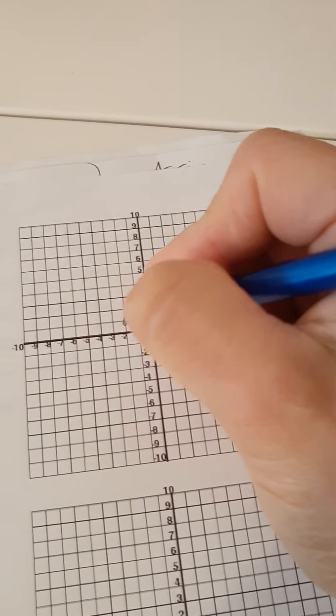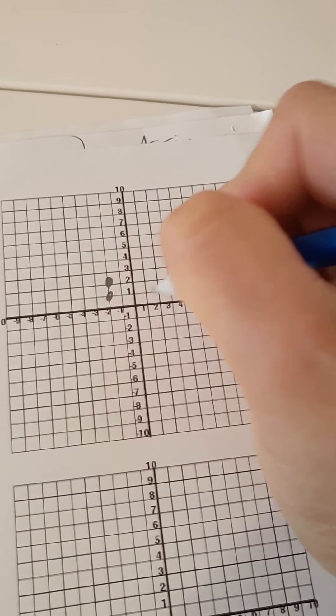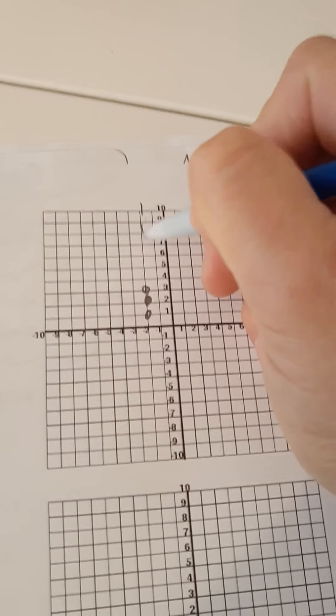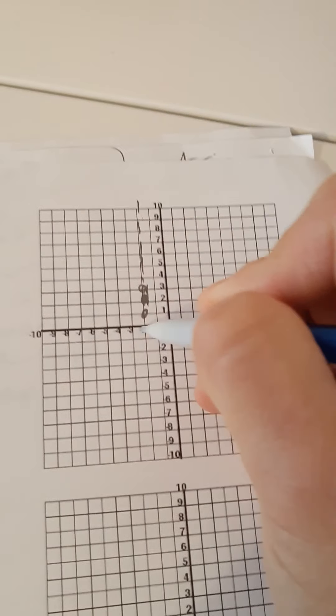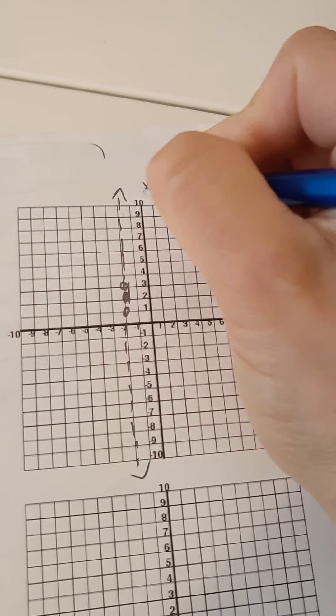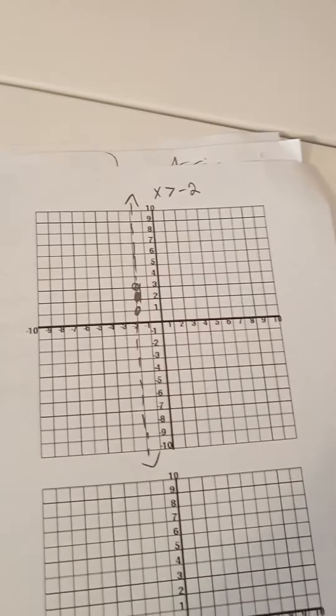So let's plot the points. Negative 2, 1, negative 2, 2, and negative 2, 3. We have to make a dashed line, dashed, dotted. I think last time I called it dotted, didn't I? Oopsies. Label it. Look at me, I'm not forgetting to label. Woohoo.